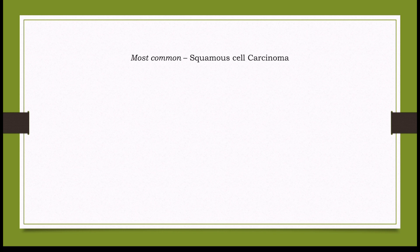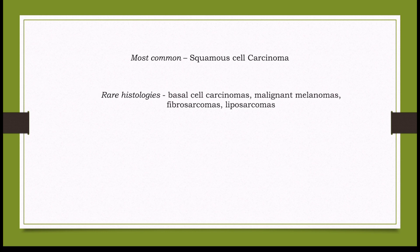What is the histology of Marjolin's ulcer? The commonest histological variety seen in Marjolin's ulcer is squamous cell carcinoma. However, Marjolin's ulcer is not necessarily squamous cell carcinoma — rarely, other histological varieties like basal cell carcinomas, malignant melanomas, fibrosarcomas, and liposarcomas can also be found in scars.